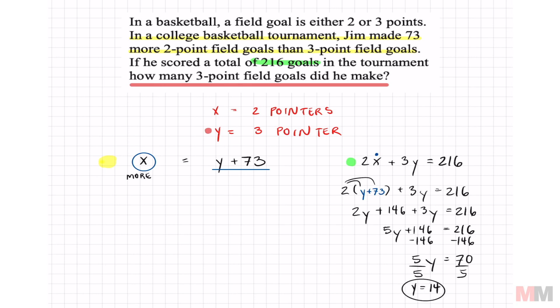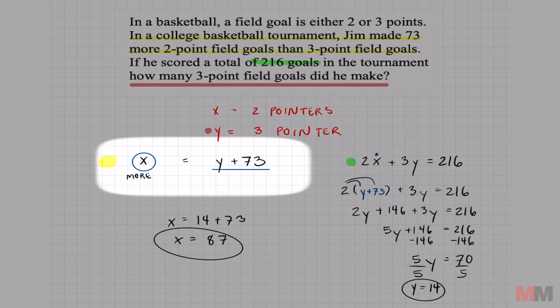You already answered the question, but I just want to solve for x so I can explain this a little better. To find x, I can just substitute the value of y. And it's easiest to substitute it right here. x equals 14 plus 73. And you get x equals 87. So let's go back to the confusing part, which was this. And you can see, this is 73 more than your three-pointers, your y, 14.